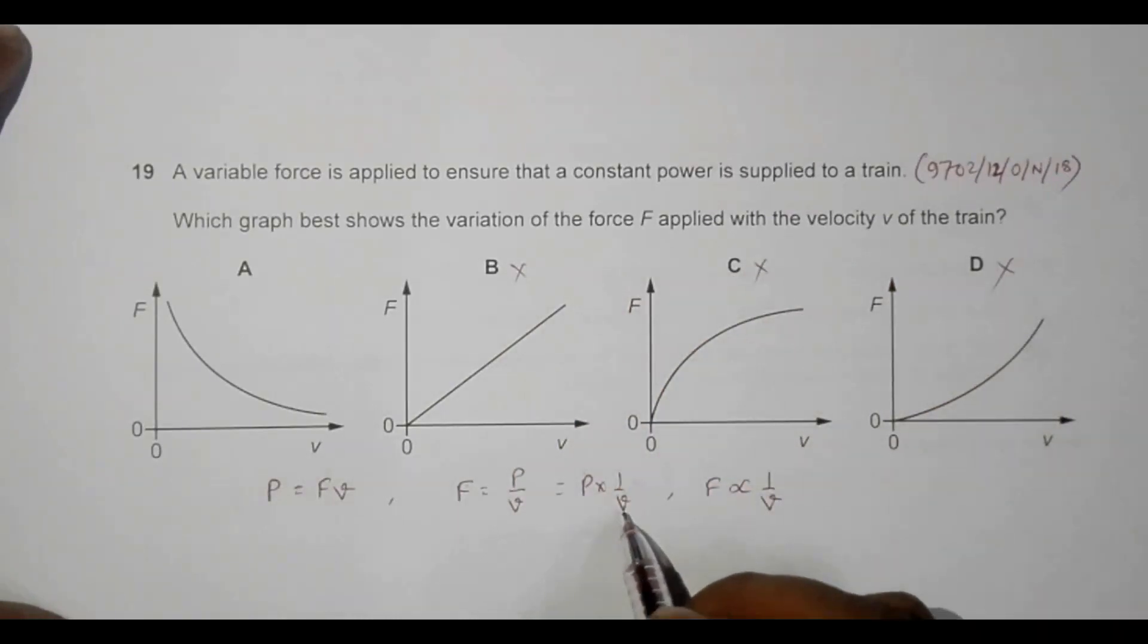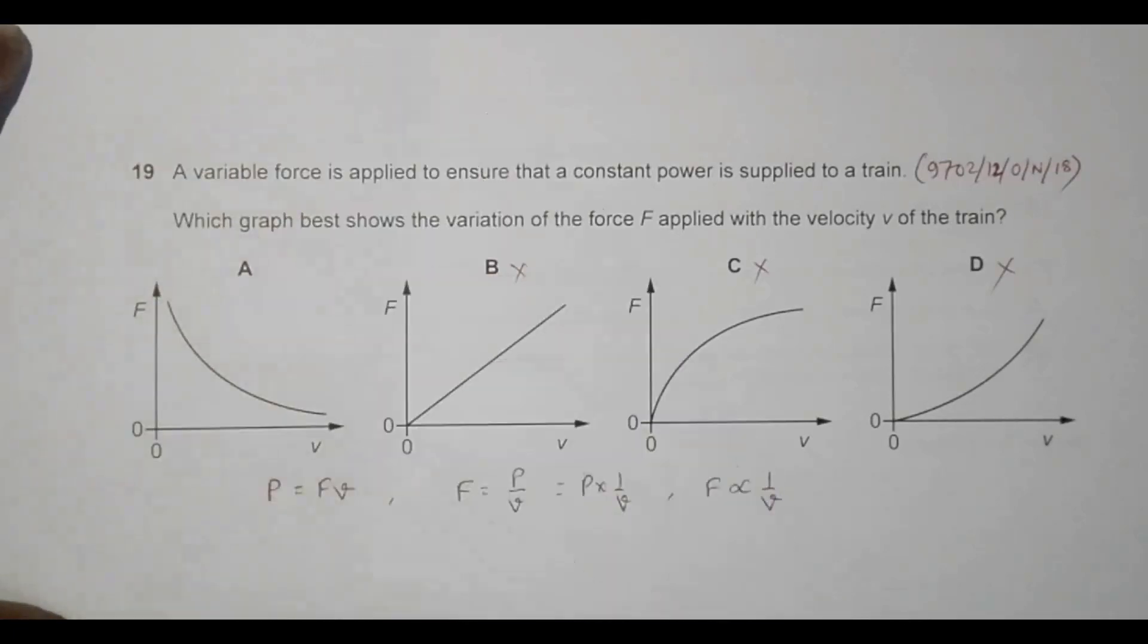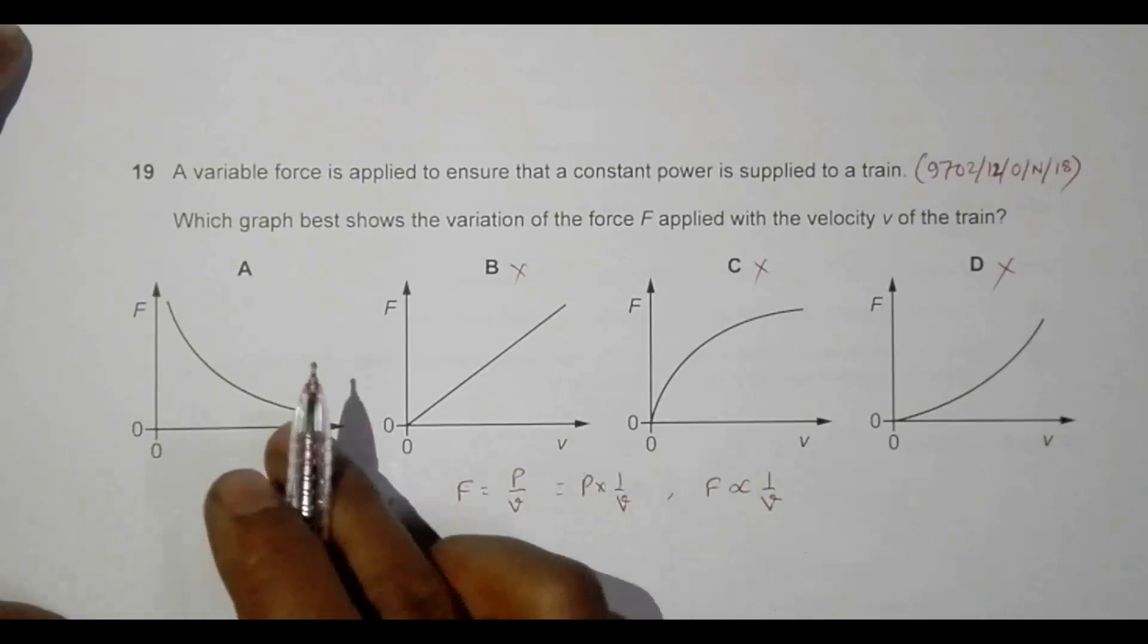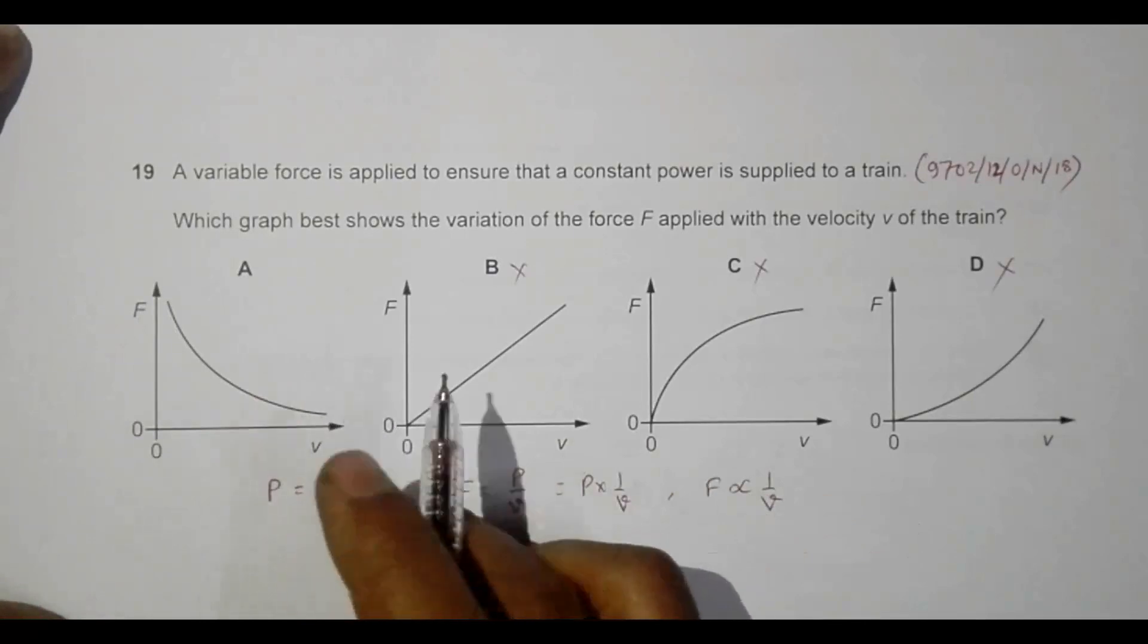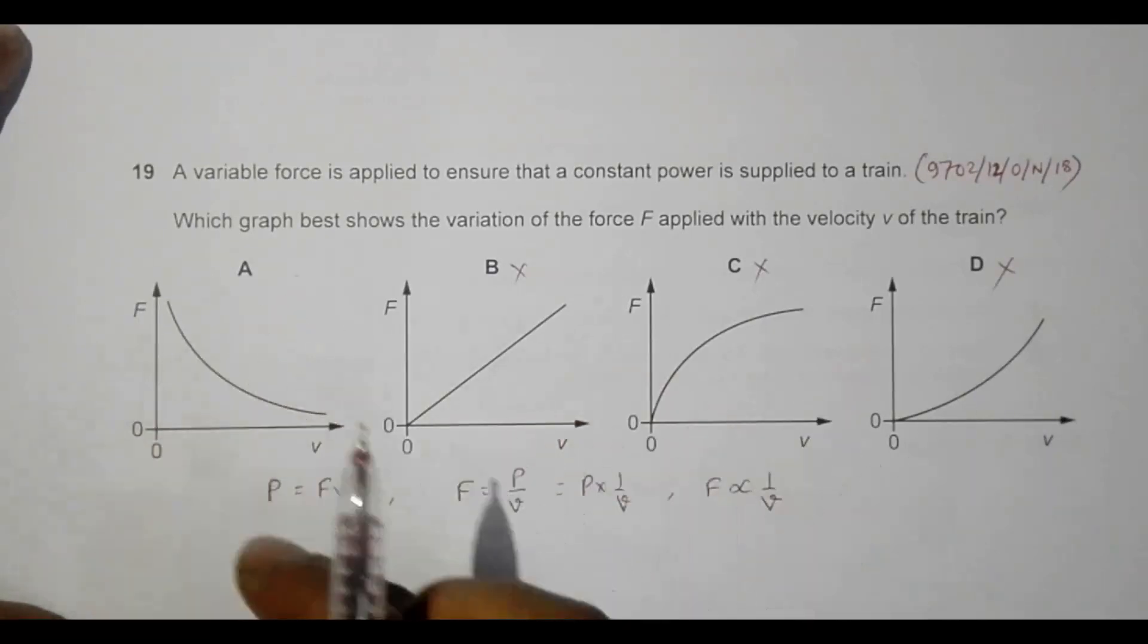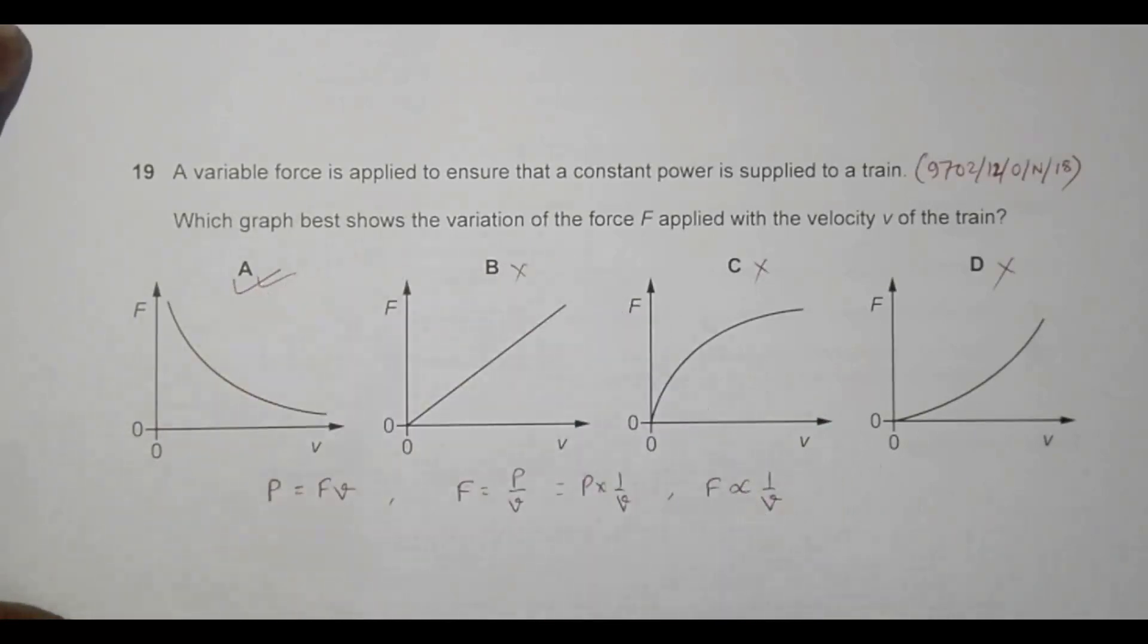When V is 0, F becomes infinite. And when V approaches infinity, F becomes 0. So the graph does not meet at any of the axes; they meet only at infinite distances. This should be the answer. Choice A is the correct choice for this question.